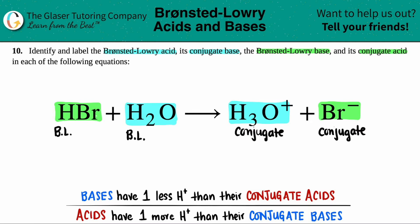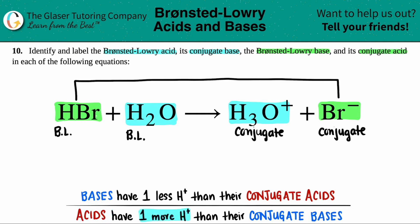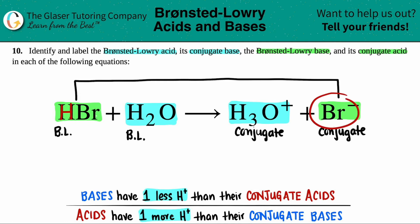Now we're going to analyze the pairs. Let's go with HBr and Br⁻. Acids always have one more hydrogen than their conjugate base, and a base will always have one less hydrogen. In terms of HBr and Br⁻: HBr has a hydrogen in front of it, while Br⁻ has no hydrogen. Acids always have one more hydrogen, so HBr is the acid out of this pair.